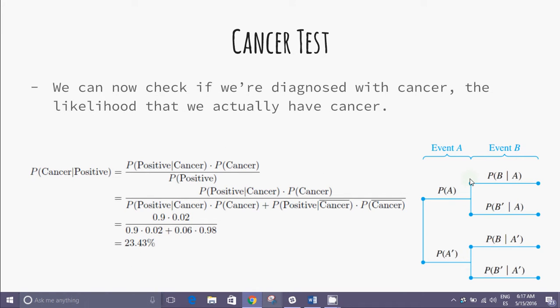Now, let us use Bayes theorem to evaluate the cancer example discussed earlier. The probability of cancer conditioned on positive test multiplied with P of cancer divided by P of positive test turns out to be 23%.